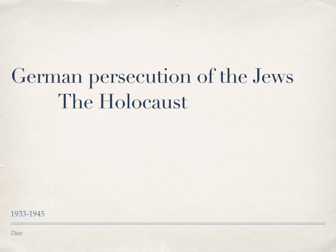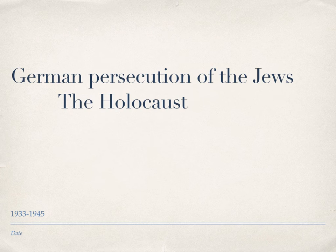Hi guys, this video is going to be looking at the German persecution of the Jews, also known as the Holocaust, which took place between 1933 and 1945 — from the time the Nazis came to power up until the end of World War Two. This is just a quick revision for question six, section D.